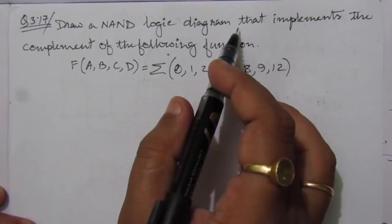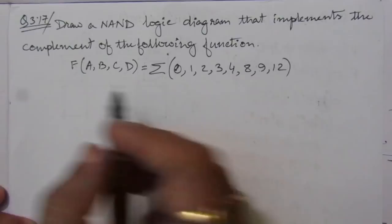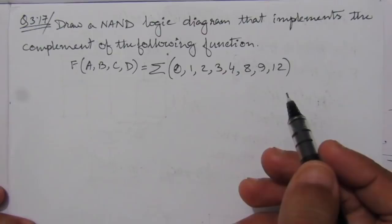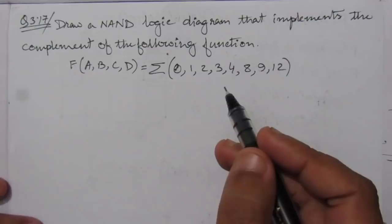The problem is: draw a NAND logic diagram — that means we have to draw a logic diagram that will use only NAND gates — that implements the complement of the following function. We are given a sum of minterms expression, and from this we have to find the complement first, then draw the logic diagram using NAND gates.